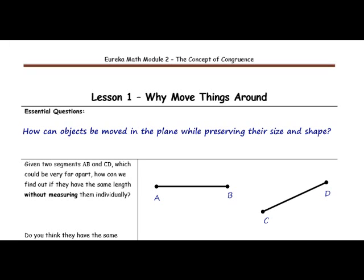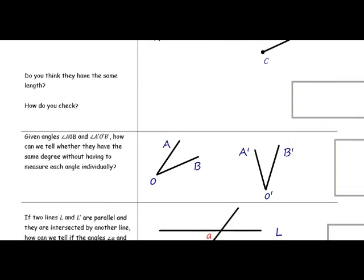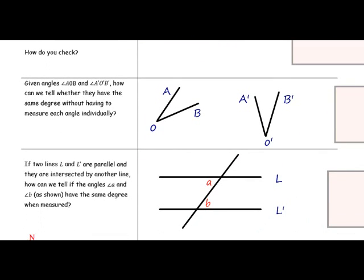And how do you check? Given angles AOB and angle A prime, O prime, B prime, how can we tell whether they have the same degree without having to measure each angle individually?